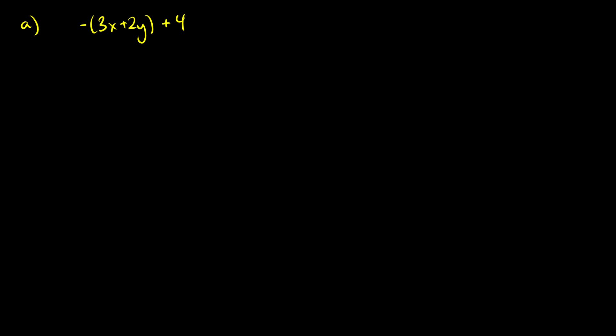So what I see here is a negative outside a bracket where two things are being added together. In my head I'm thinking this is the same thing as negative one times (3x + 2y), and then I'm adding four off to the side, so I'm not going to have to deal with the four here; it's just an extra thing.